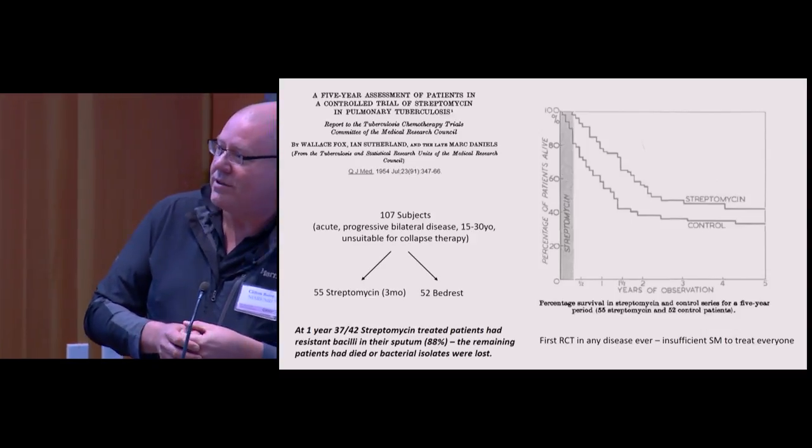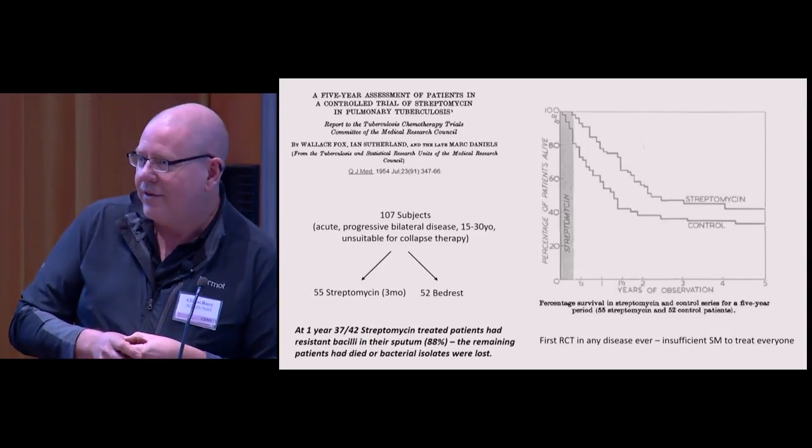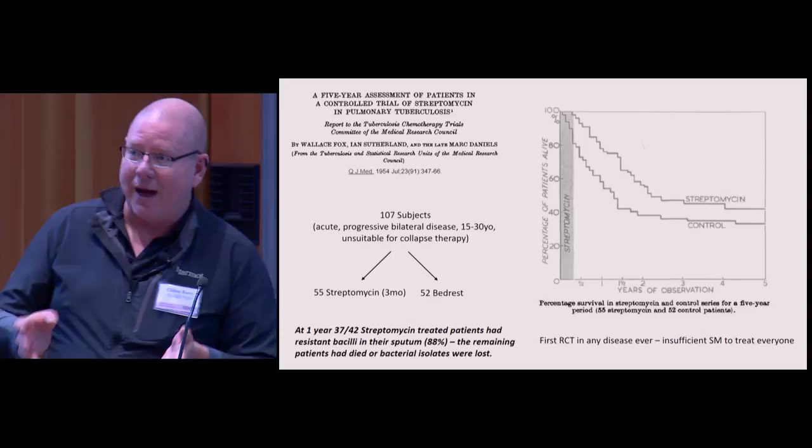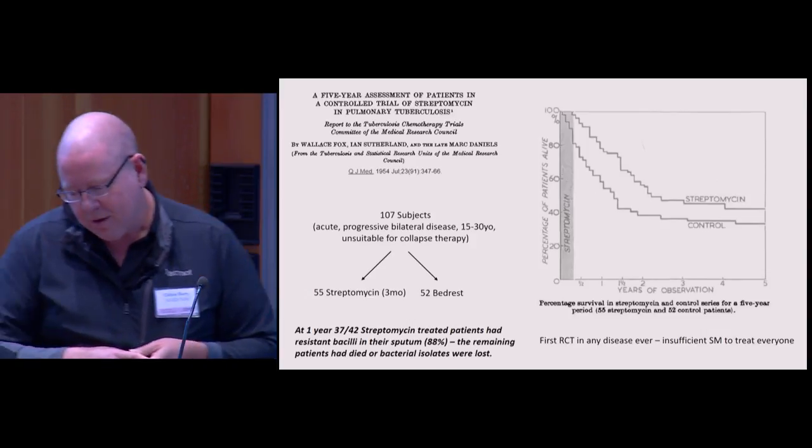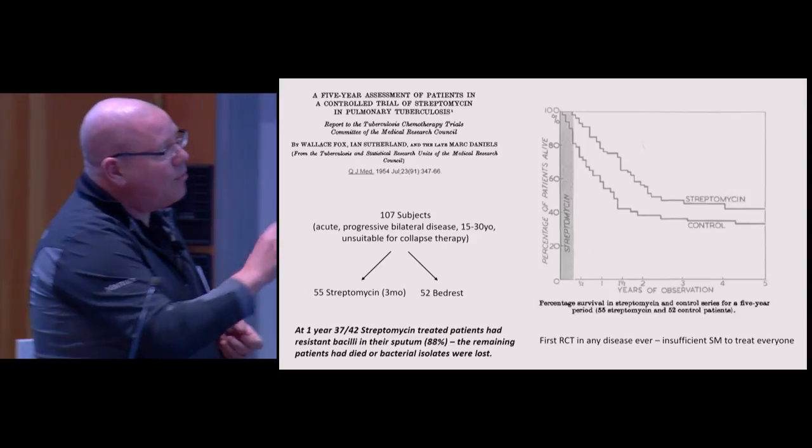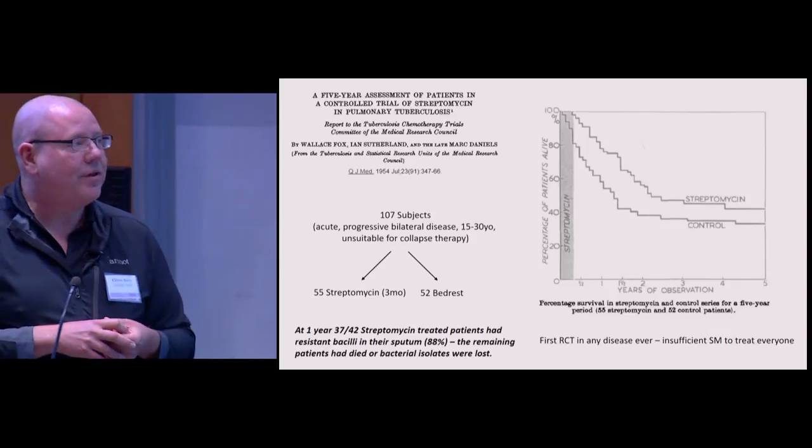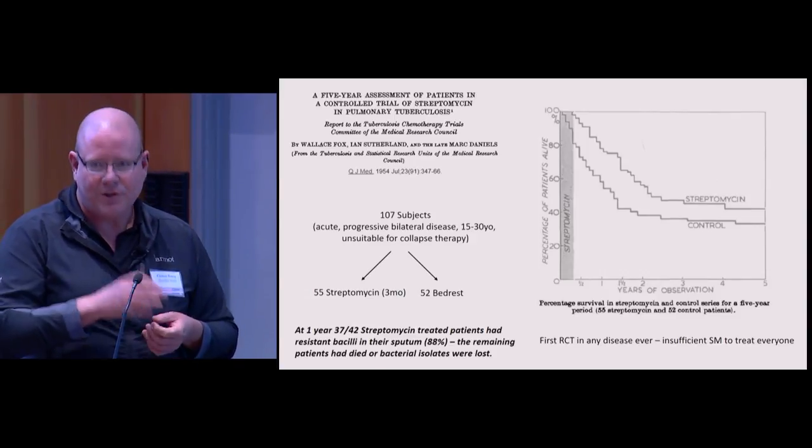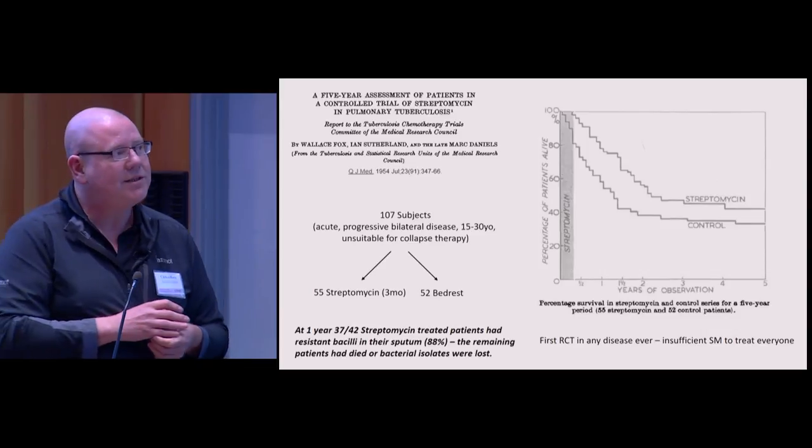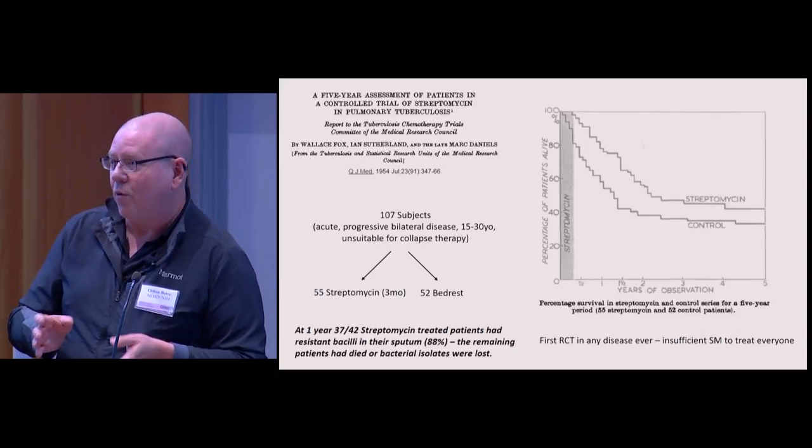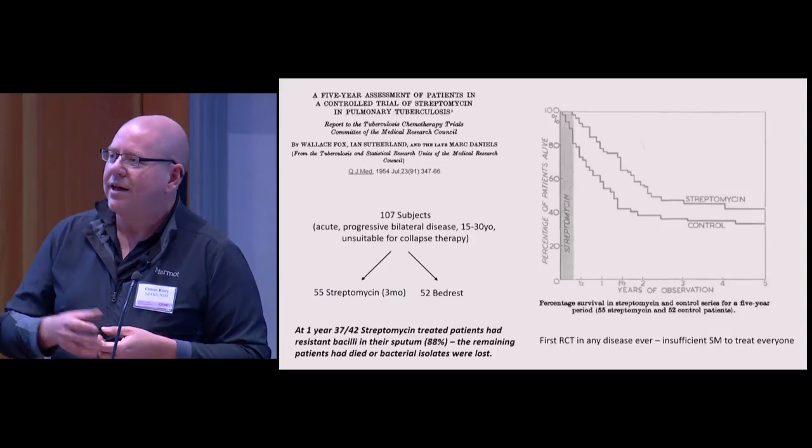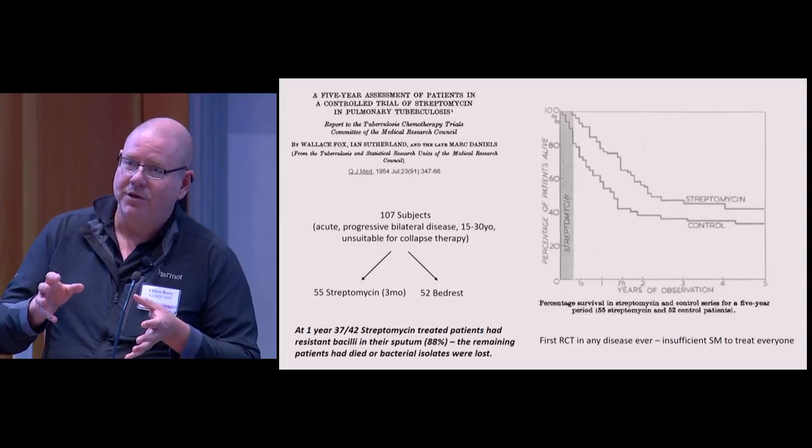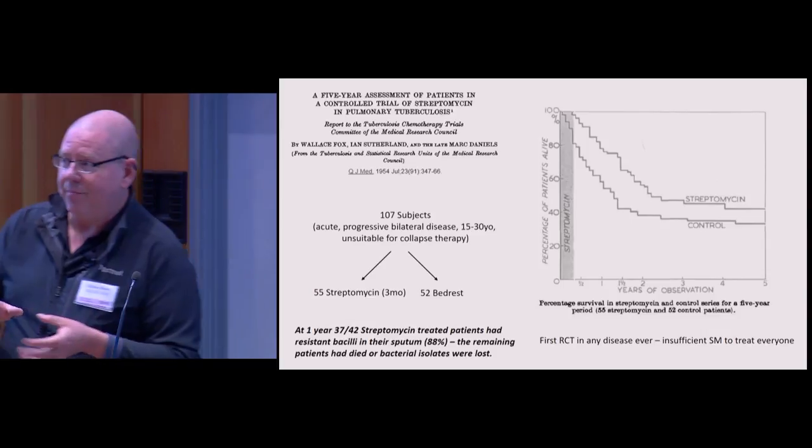They could only give drug for about three months. What you see is that giving the drug didn't really have a ginormous impact on how patients did long-term. Most people who had progressive acute bilateral disease died in that period. At one year after treatment was initiated, 37 of 42 streptomycin-treated patients had streptomycin-resistant bacteria—that's 90%. This underlies our principle today of giving combination therapy.